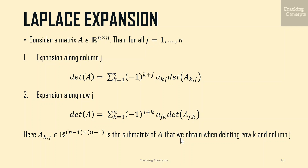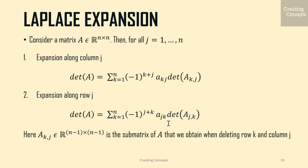Now we look into Laplace expansion. Consider a matrix A belonging to the n×n dimension space. For all j in the range 1 to n, the expansion along column j is: det(A) = Σ_{k=1}^{n} (−1)^{k+j} · A_{kj} · det(Ã_{kj}), where k is the row index and j is the column index, multiplied by the determinant of the matrix obtained when the kth row and jth column are removed. Similarly, expansion along row j is: det(A) = Σ_{k=1}^{n} (−1)^{j+k} · A_{jk} · det(Ã_{jk}), where j is the row index and k is the column index, multiplied by the determinant of A obtained after removing the jth row and kth column.